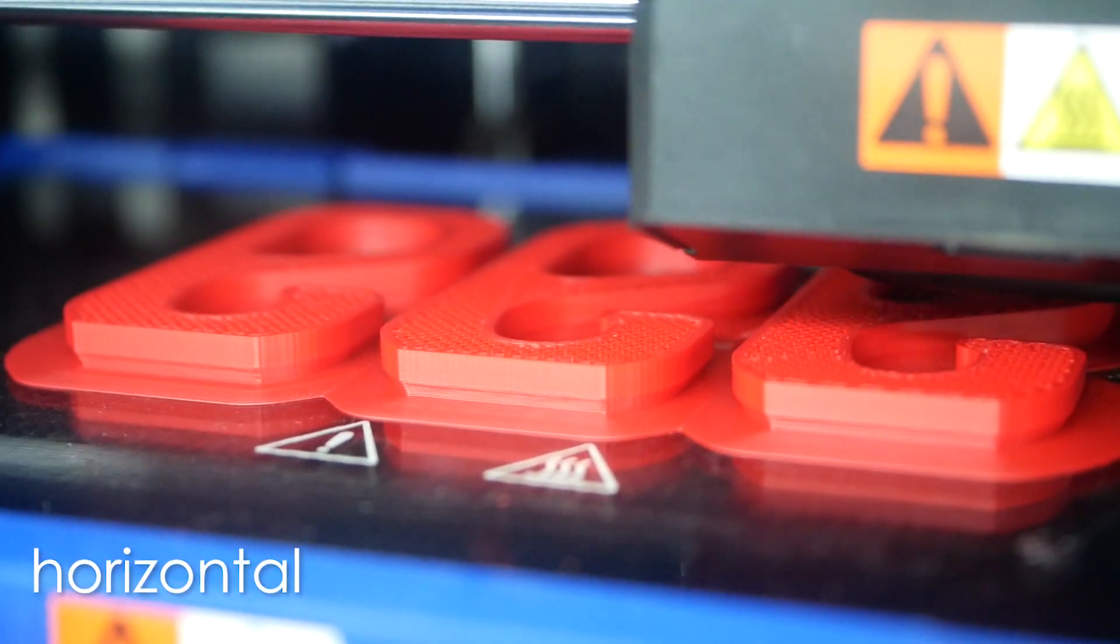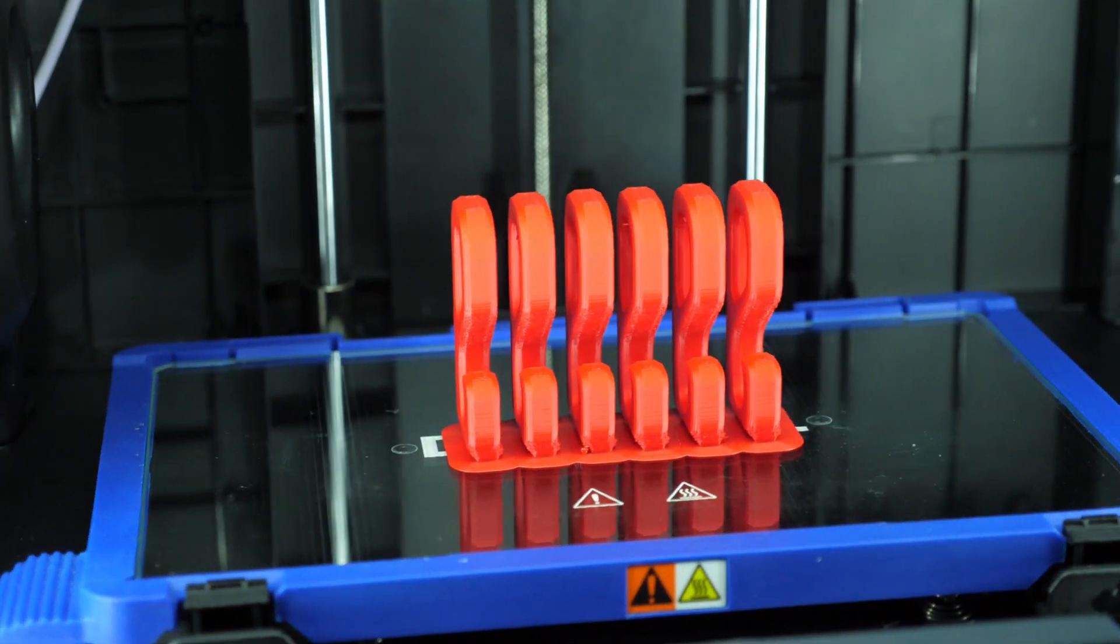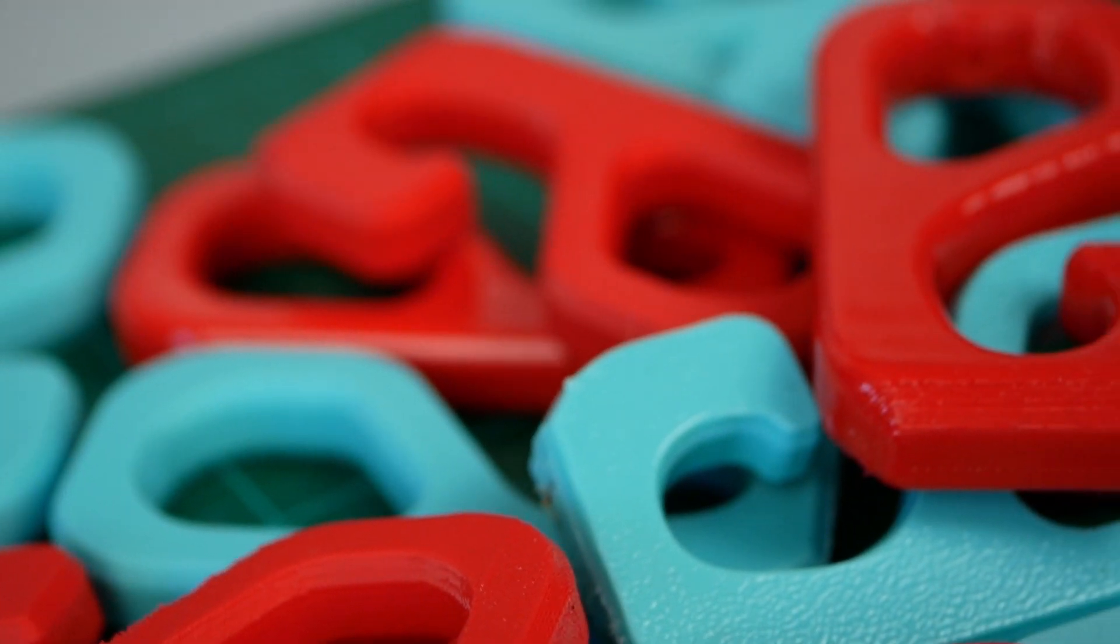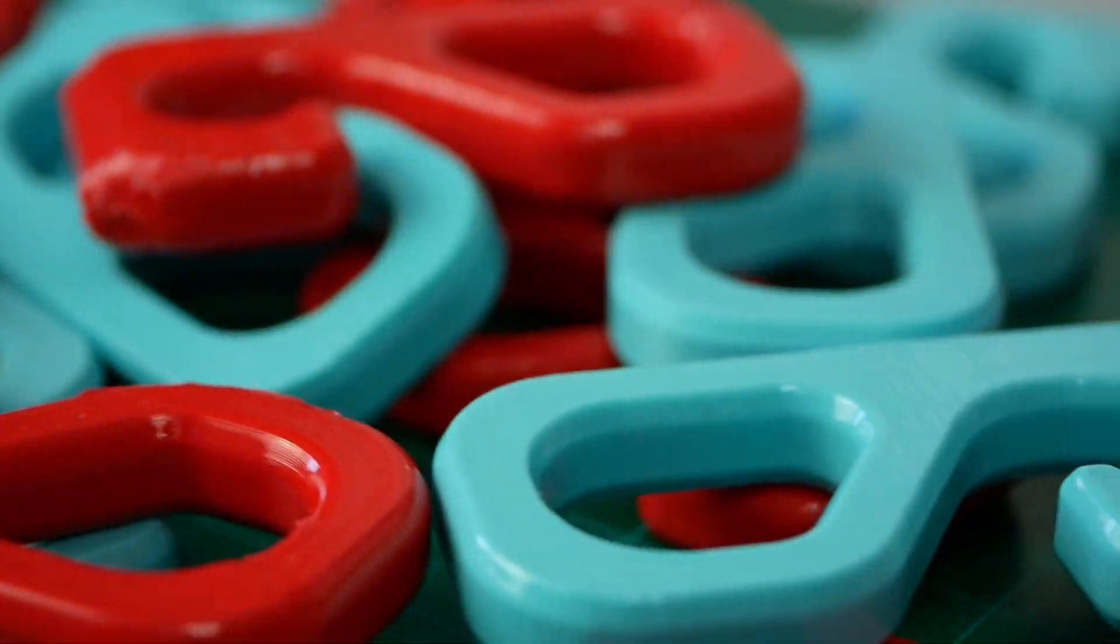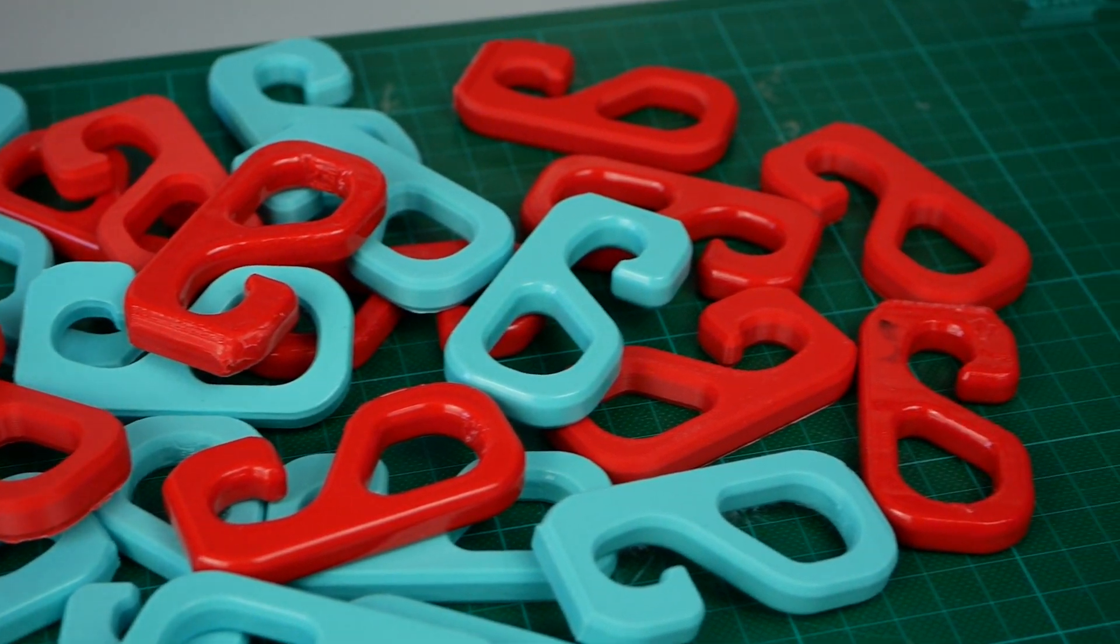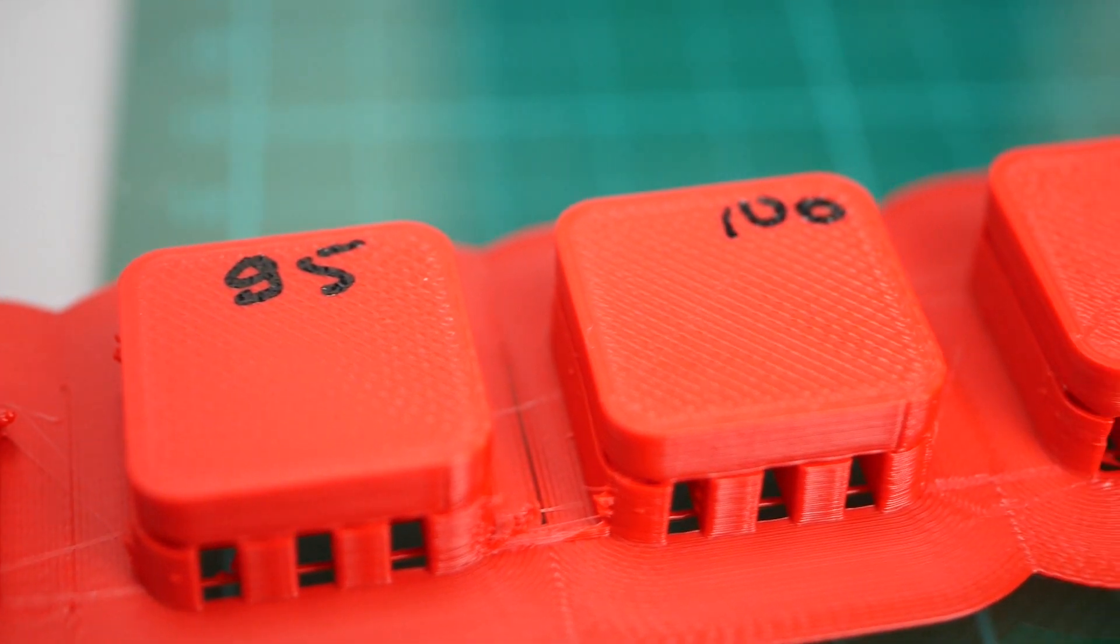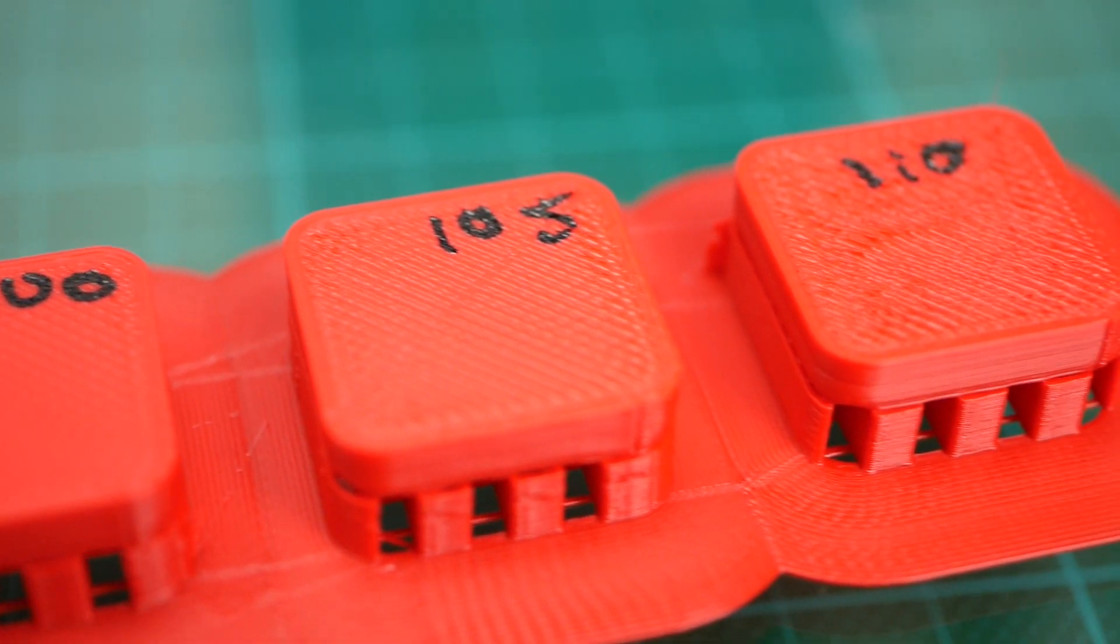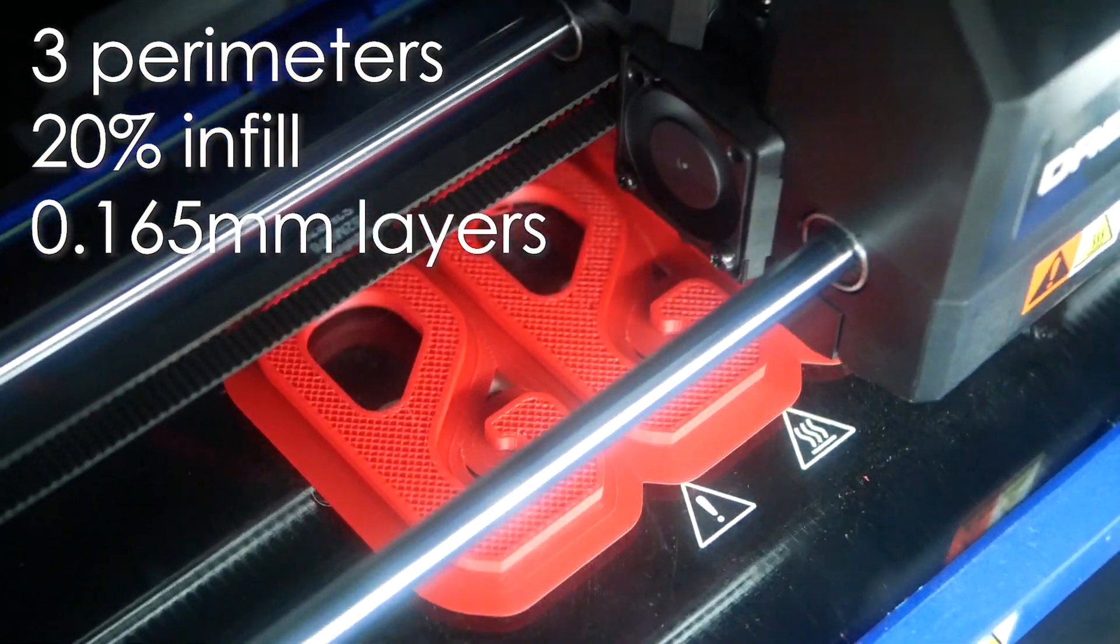For the following tests I have printed horizontal and vertical test hooks to test firstly if the layer adhesion changes and secondly if the smoothing procedure changes the properties of the base part. Half of the parts were smoothed, the other ones were not. For each orientation, material and smoothing status I had 3 samples for statistical evaluation which makes 24 samples in total. Before starting the prints I checked the extrusion amount with my extrusion blocks. This was to make sure that we don't underextrude which is detrimental for layer adhesion. All parts were printed with 3 perimeters and 20% infill at a layer height of 0.165mm.